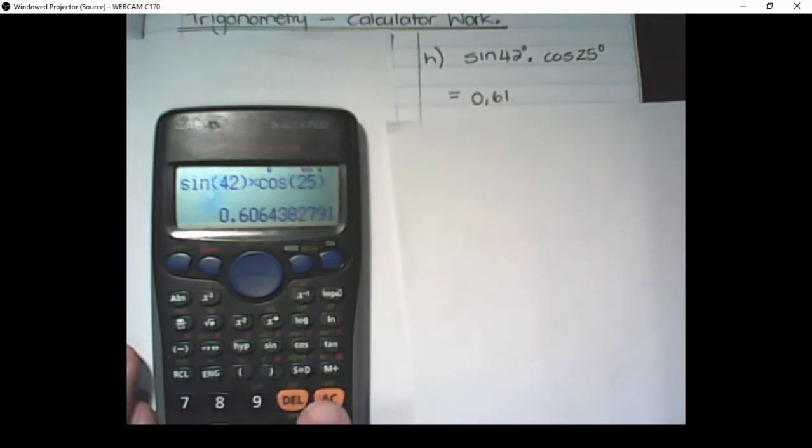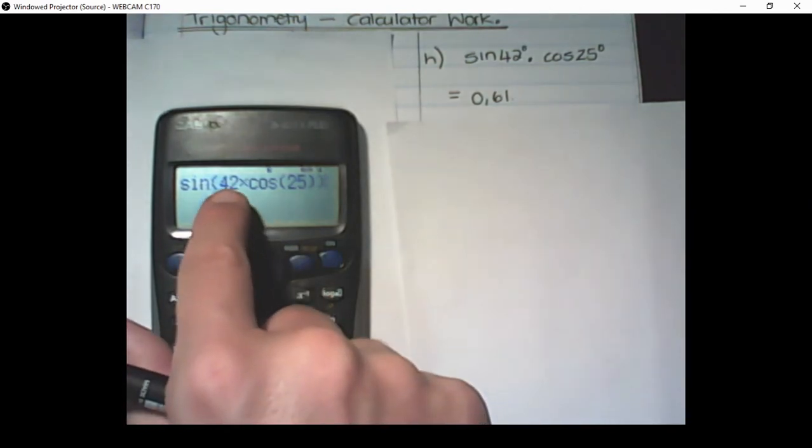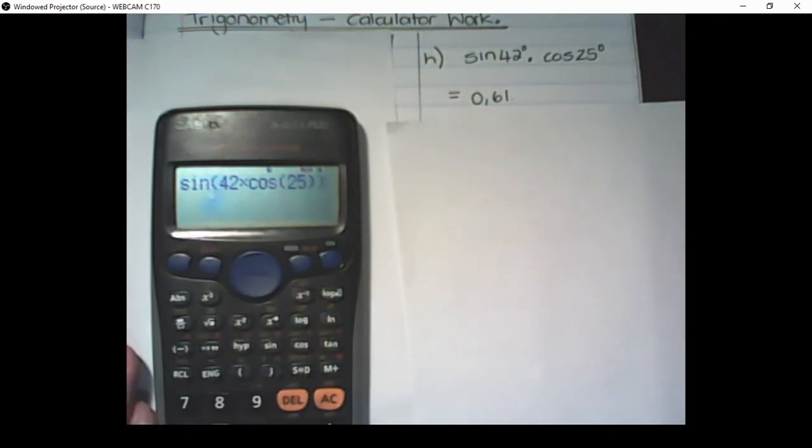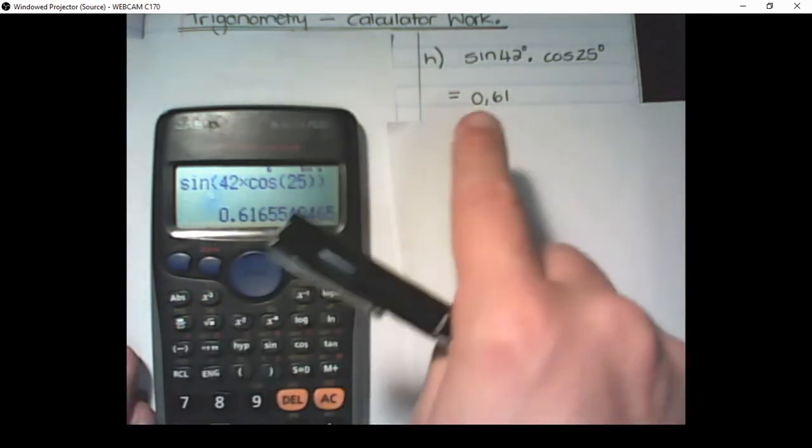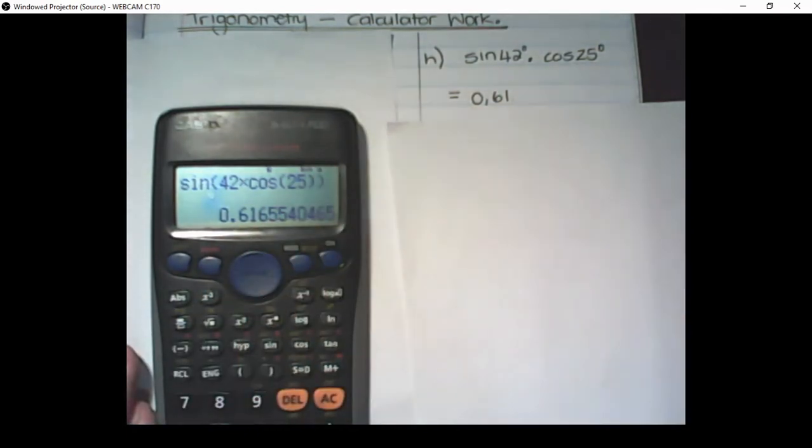But notice if I don't close the bracket. Sine of 42 times the cos of 25. Now I haven't closed the bracket after the 42. And I have a different value. Even though it's very close. The previous value was 0.606.